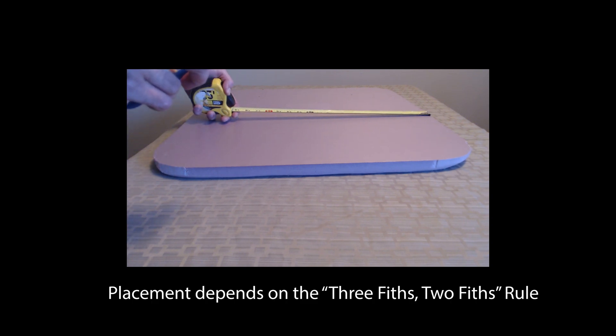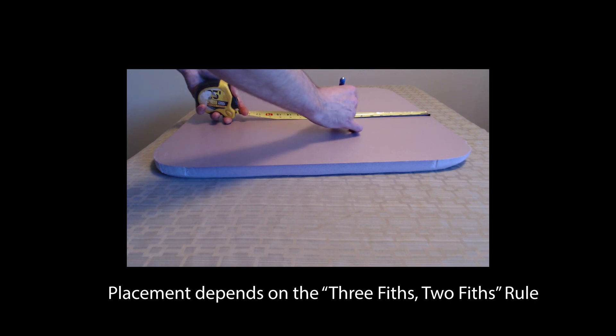And we're back. So we've got our panel it's dried and now we need to find the placement of our sound actuator. It does not go in the center of the panel. It depends on the three-fifths two-fifths rule. For some reason acoustically this just works out better for these panels.